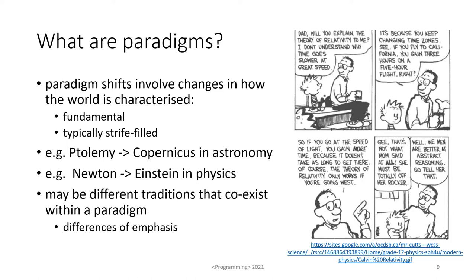For example, the shift between the Ptolemaic view of the universe with the earth at the centre and the Copernican view of the sun being at the centre involved, amongst other things, Galileo being silenced by the Vatican. More recently, the shift from Newtonian mechanics to Einsteinian relativistic physics didn't involve quite as much strife but still was a big shift. Nonetheless, Kuhn says that there may be different traditions that coexist within a paradigm — differences of emphasis. For example, quantum physics is treated differently in physics itself, in electrical engineering, in material science, and in mathematics.